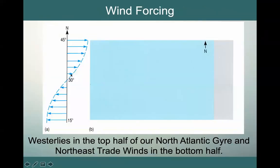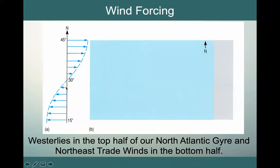The first way to look at this was done by Harold Sverdrup. He took a very simple idea of wind forcing — just westerlies going from west to east, a simple zonal flow in the top part of the North Atlantic gyre. Then in the bottom part, starting at about 30 degrees, we have increasing trade winds going from east to west. That wind forcing is very strong at 45 degrees and decreases to zero at 30 degrees, then changes direction down to 15 degrees north.